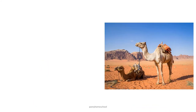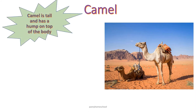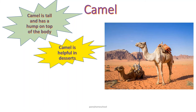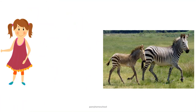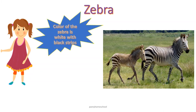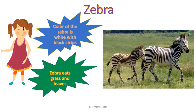This is camel. Camel is tall and has a hump on top of their body. Camel is helpful in deserts. Camel loves eating grass, grains, seeds and plants with thorns like cactus. This is zebra. The color of zebra is white with black strips on its body. Zebra eats grass and leaves.